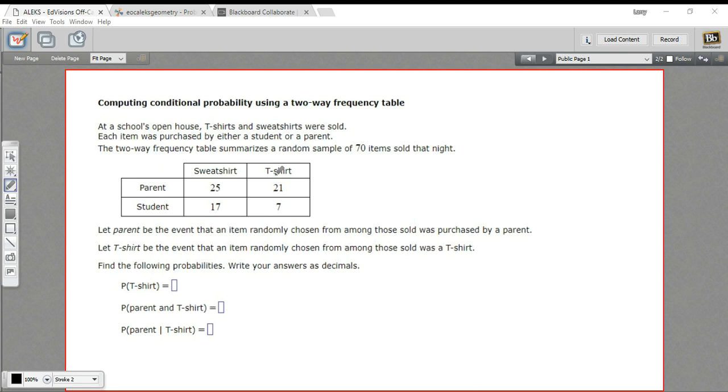To compute that, we want to take the number of t-shirts, the total number of t-shirts sold, and put it over the total number of items. So 21 plus 7, that's 28, and the total number of items is 70.